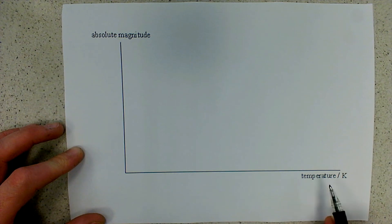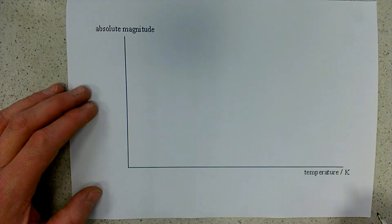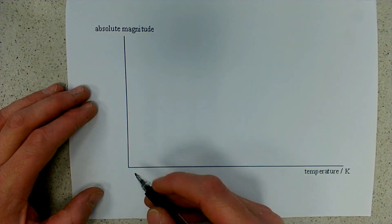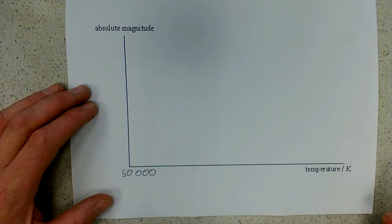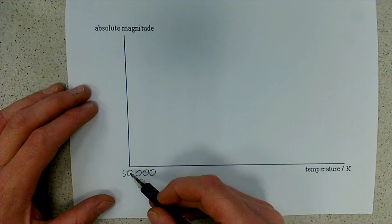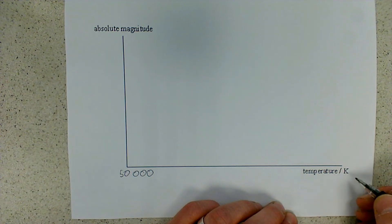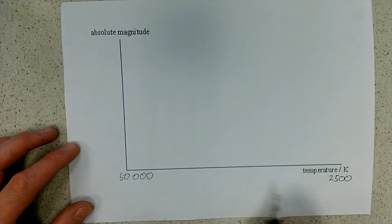If we're marking up with temperature, we need to remember that the hottest stars, the O-class stars over on the left hand side of the diagram, will have a temperature of around 50,000 Kelvin. So we mark up 50,000 over here on the left hand side and the coolest stars over here on the right hand side, the M-class stars, will have a temperature of around 2,500 Kelvin.